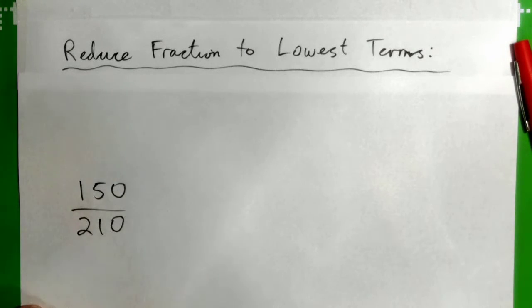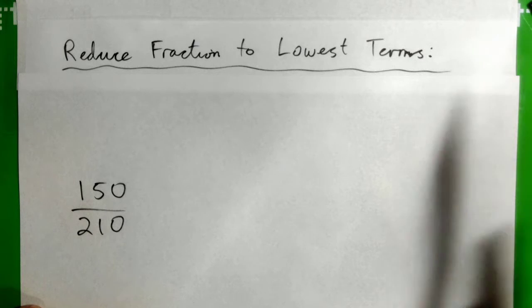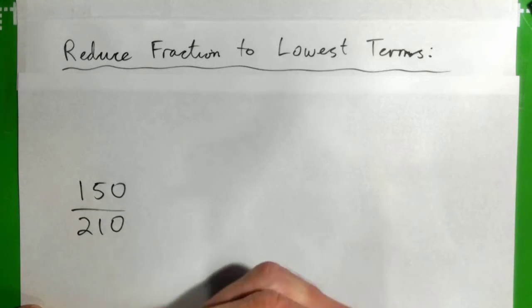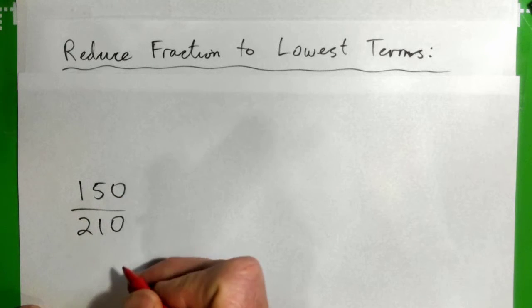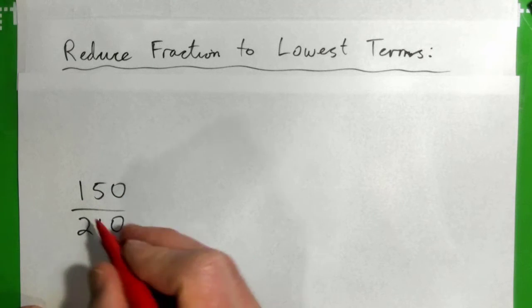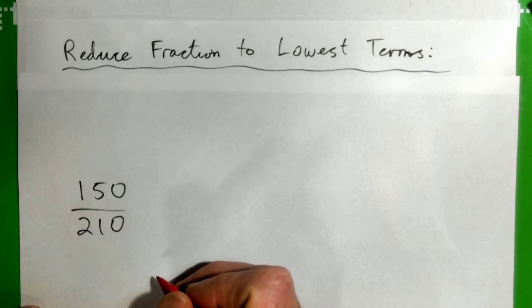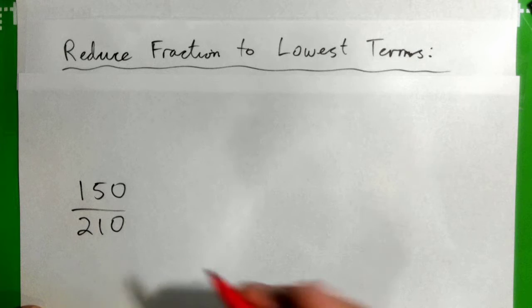What do you think? 10 is a good choice because they both end with a zero, so they're multiples of 10. 10 into 150 goes 15 times, and 10 into 210 goes 21 times. Now you can just cross off the zeros like that, and you have 15 over 21.